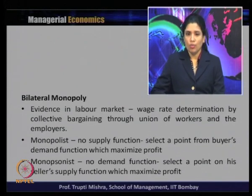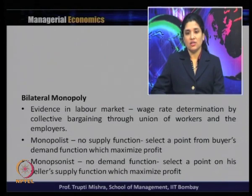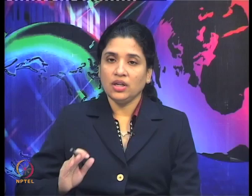Similarly, from the monopsonist's point of view, there is no demand curve — there is an absence of a demand curve in the monopsony market — and they select a point on the seller's supply function which maximizes the profit. So in the case of a monopolist there is no supply function; to maximize profit they select a point from the buyer's demand function. And in the case of a monopsonist there is no demand function, and to maximize profit they select a point from the seller's supply function.